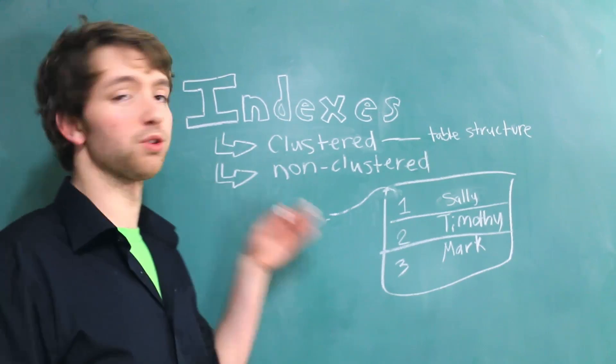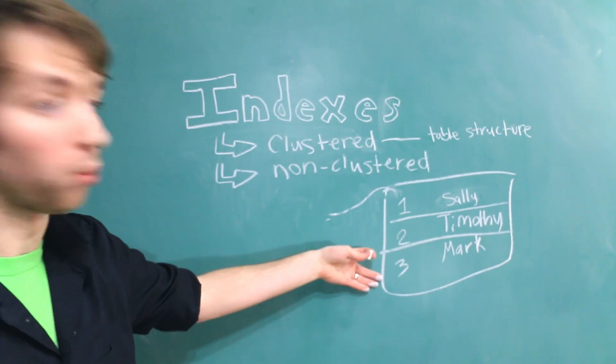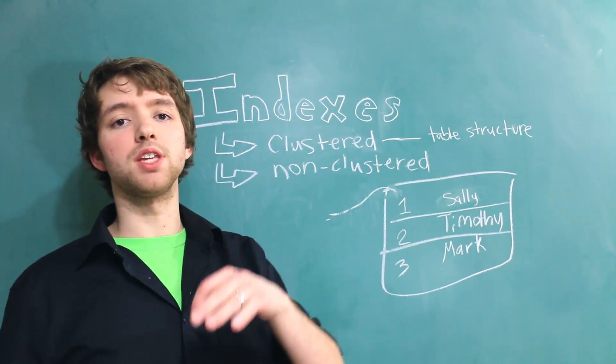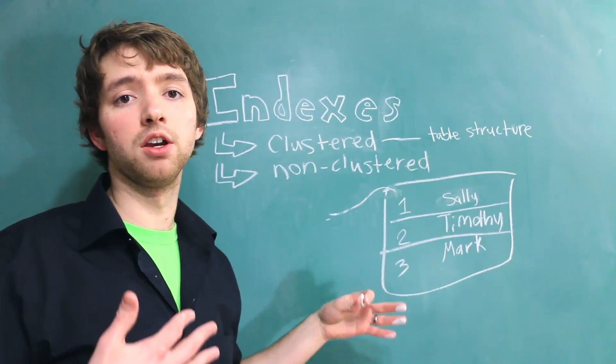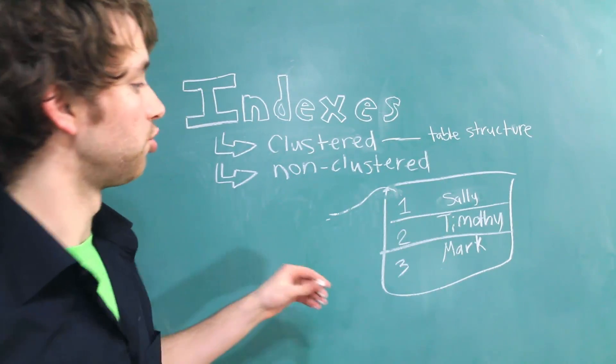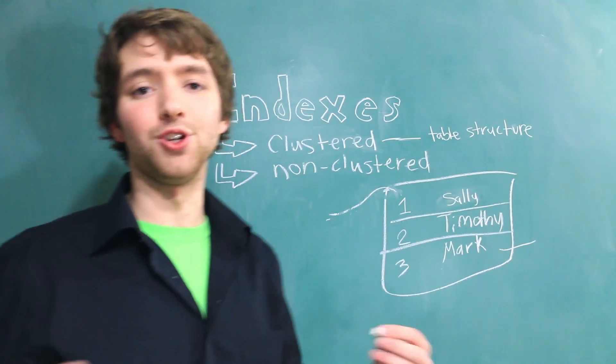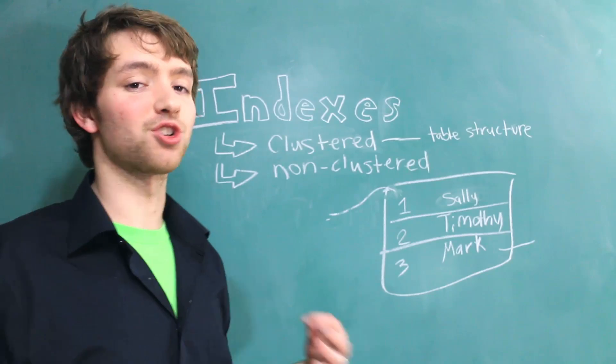So if you were to tell the database, yo, give me the dude with the ID of 3, well, it's easy all you got to do is go down to the ID of 3. Boom, right there. But if you say something like, yo, give me the person with the name Mark, well, now the database is going to have to go and scan through every single row to try to find Mark. So you can see that it can be much more time consuming. When the things are in some logical order the database can find that data much quicker.